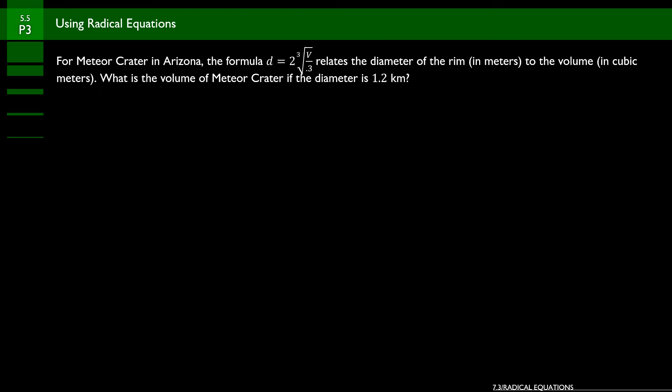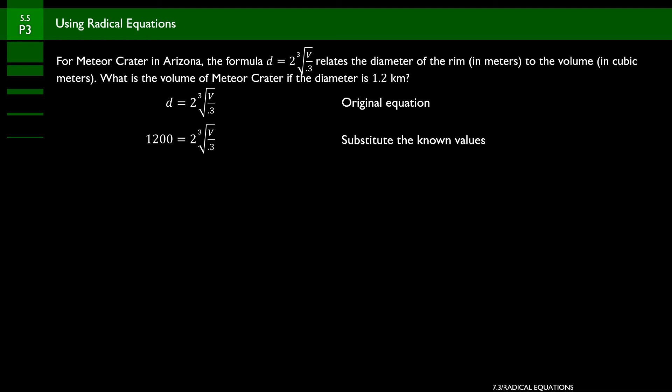Problem 3 is a word problem about Meteor Crater in Arizona. The formula d equals 2 times the cube root of v over 0.3 relates the diameter of the rim in meters to the volume in cubic meters. The diameter is 1.2 kilometers, which we convert to 1,200 meters. Plugging in: 1200 equals 2 times the cube root of v over 0.3. Divide both sides by 2 to isolate the radical, giving 600 equals the cube root of v over 0.3.